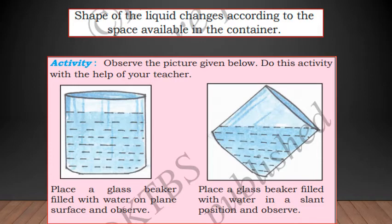Next, the shape of the liquid changes according to the shape available in the container. Observe the picture given below. Do this activity with the help of your teacher. You can do this at home children. Place a glass beaker filled with water on plain surface and observe. It is just straight, in the shape of the container. Now place a glass beaker filled with water in a slant position and observe. If you just tilt it and see, the shape of that water which is present inside the glass changes a bit. It tilts towards the other side. That shows the shape of the liquid changes according to the space available in the container.